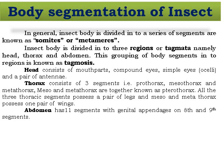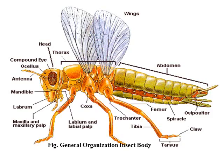The abdomen has 11 segments, with genital appendages on the eighth and ninth segments. This is the distribution of segments of the insect body, covering the head, thorax, and abdomen.